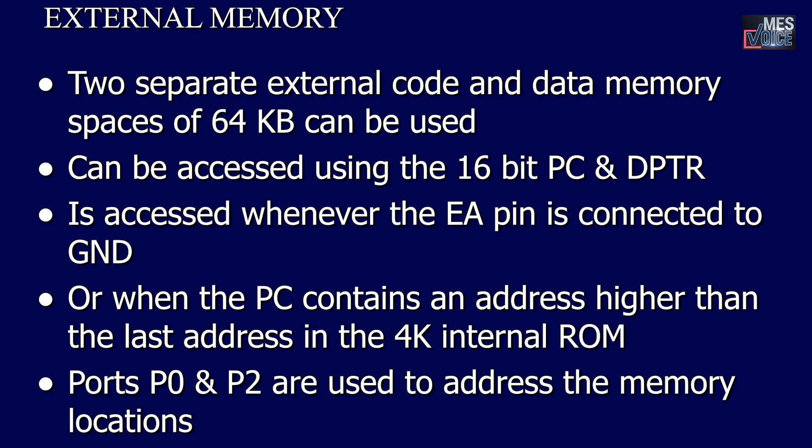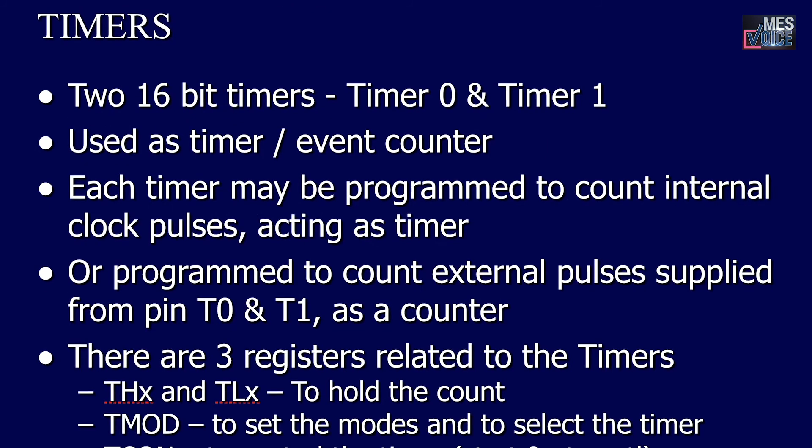Two separate external code and data memory spaces of 64 kilobytes each can be used. They can be accessed using the 16-bit program counter and data pointer. External memory is accessed whenever the external access (EA) pin is connected to ground, or when the program counter contains an address higher than the last address in the 4K internal ROM. Ports P0 and P2 are used to address the memory locations.